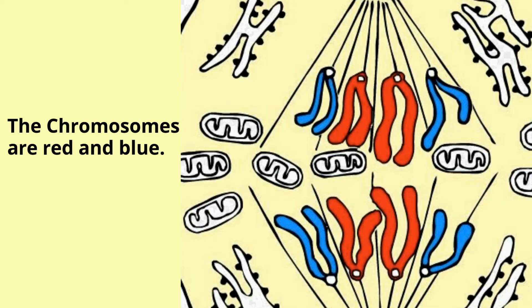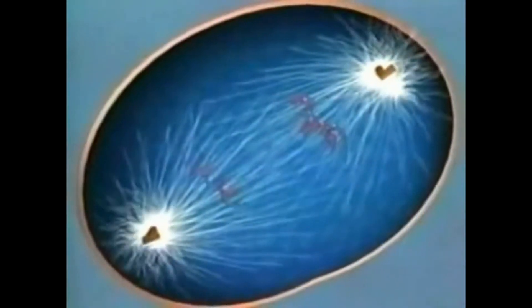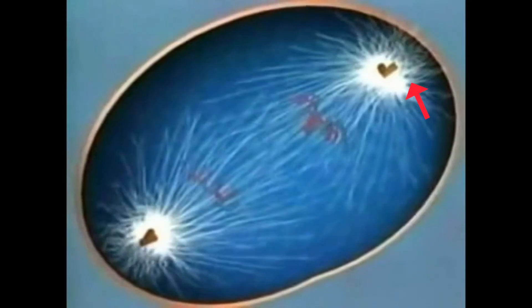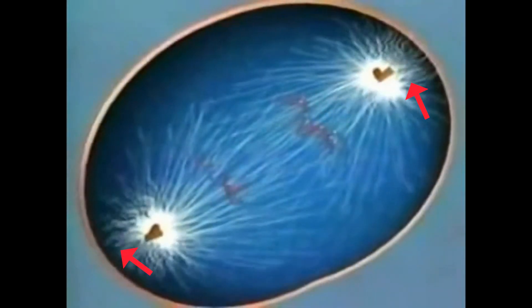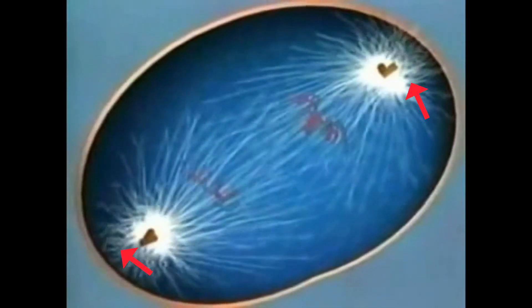The chromosomes of each pair are pulled towards opposite ends of the cell. Microtubules not attached to chromosomes elongate and push apart, separating the poles and making the cell longer.